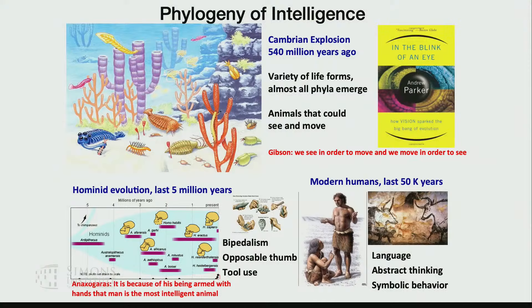Since LLMs have been advocated as solutions to AGI — and I find the term AGI itself a very problematic concept, which will become clearer later — let's start by understanding something about artificial intelligence. Before we understand artificial intelligence, let's understand natural intelligence.